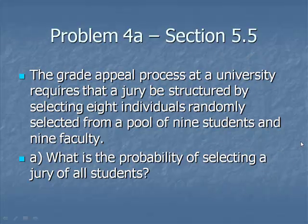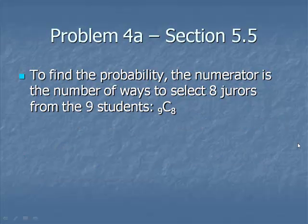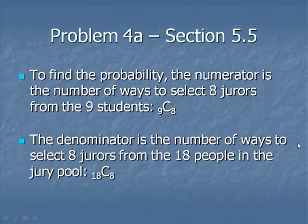On to the last problem for the day. The great appeal process at a university requires that a jury be structured by selecting 8 individuals randomly from a pool of 9 students and 9 faculty. What's the probability of selecting a jury of all students? To find the probability, the numerator is going to be the number of ways to select 8 jurors from the 9 students. This is a combination. We're selecting 8 out of 9, there's no repetition, and the order of selection doesn't matter. The first person selected is on the jury, the second person selected is on the jury, and so on.